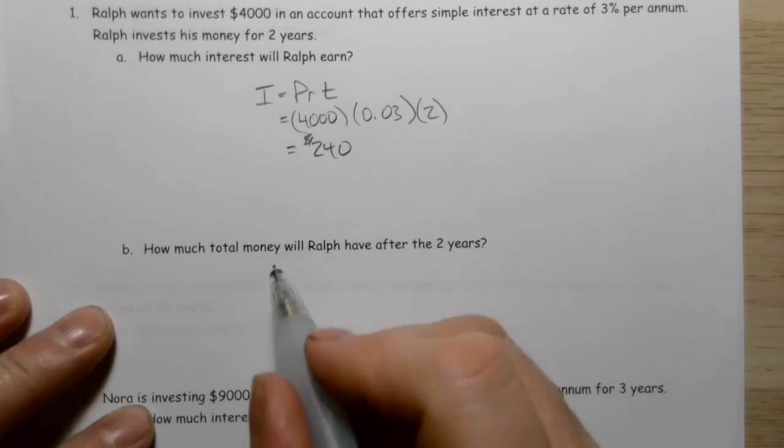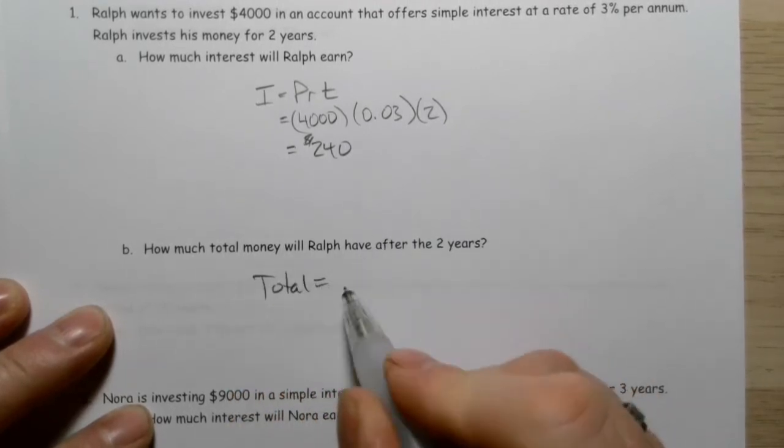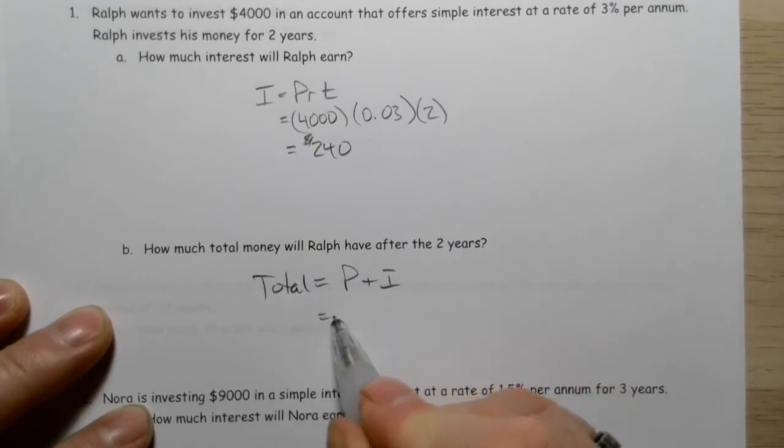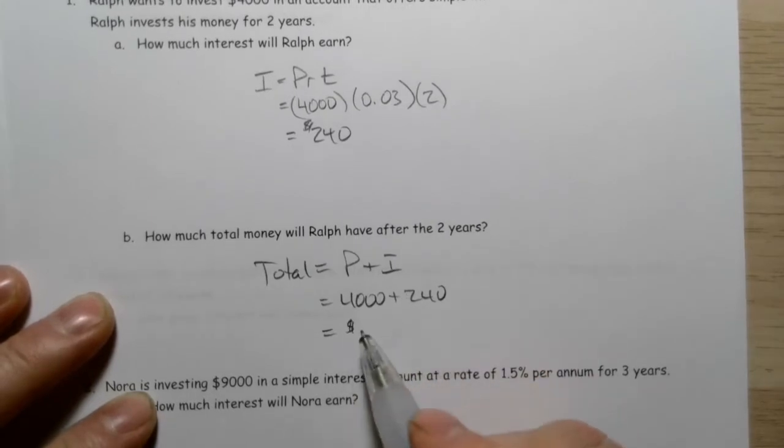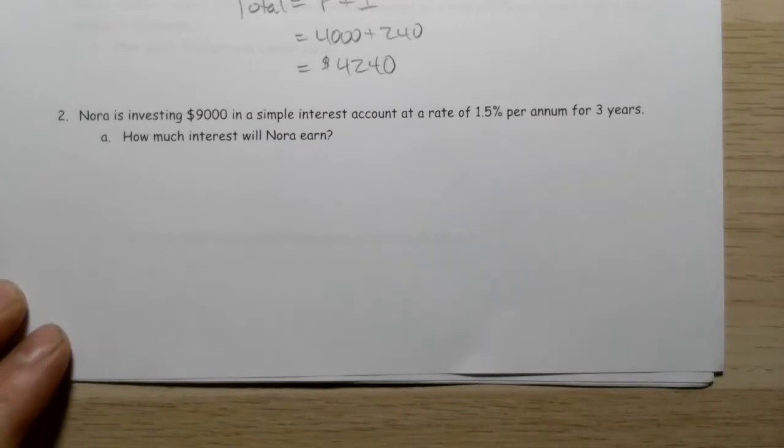How much money will he have at the end? His total is going to equal his principal plus his interest. That's $4,000 plus $240, so he will have $4,240.